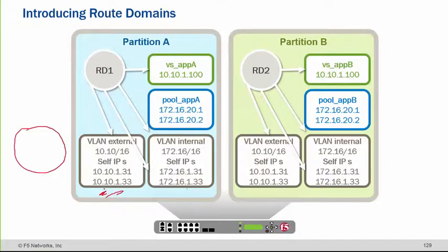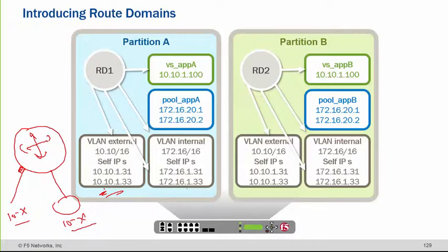Within the same routing table — think of this: you have a router, and one subnet is 10.x. Can you define another interface with the same subnet on the same router? No, because every interface on the router is a different network, and they would be overlapping with each other.